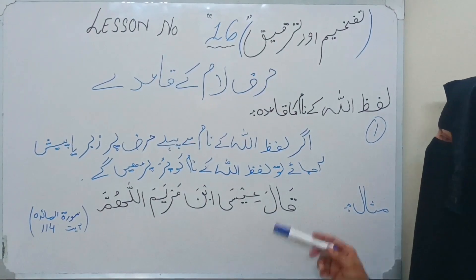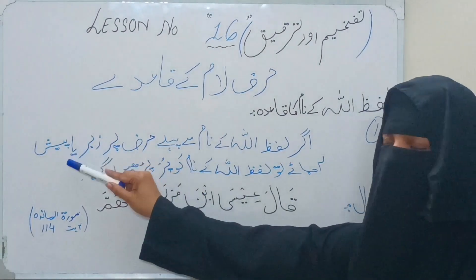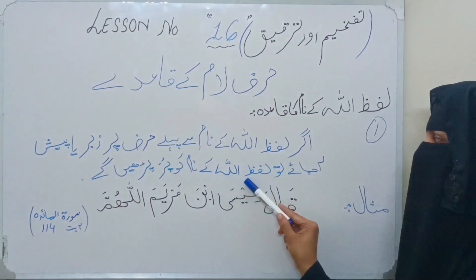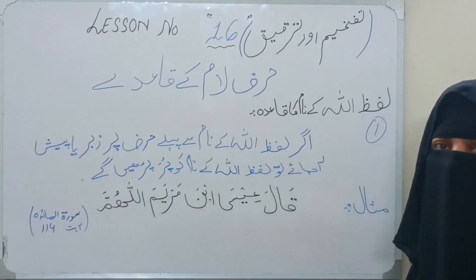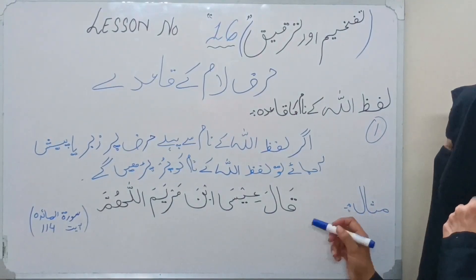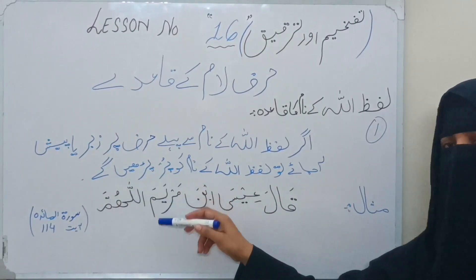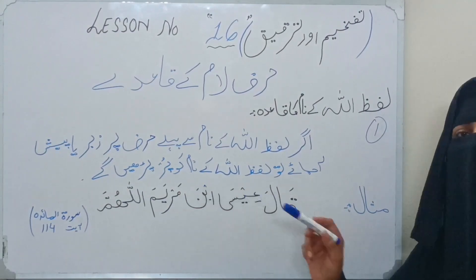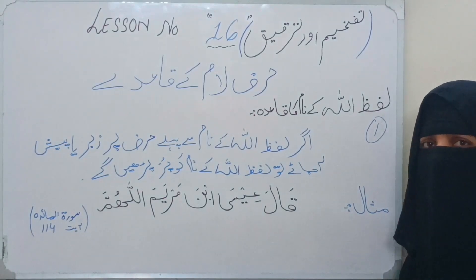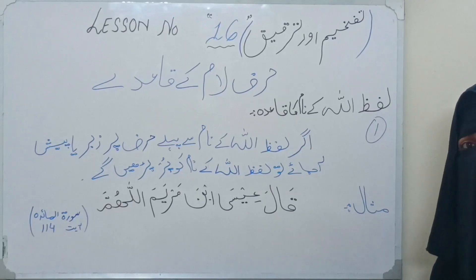پہلا قائدہ یہ ہے کہ اگر لفظ اللہ کے نام سے پہلے حرف پر زبر یا پیش — یعنی فتحہ یا ضمہ آ جائے — تو اللہ سبحانہ وتعالیٰ کے نام کو ہم پور یعنی موٹا پڑھیں گے۔ اللہ کے نام سے پہلے جو previous لیٹر ہوگا اس کے اوپر فتحہ یا ضمہ ہو تو اس کنڈیشن میں اللہ سبحانہ وتعالیٰ we should have to read with a full mouth.